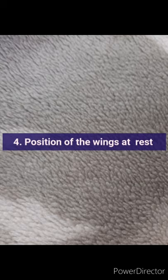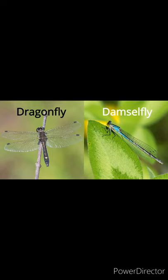Our last point is the position of the wing at rest. In this image both dragonfly and damselfly are shown side by side at rest in their habitat. When not in flight, a dragonfly's wings stick straight out perpendicular to its body, like aeroplane wings. When a damselfly is at rest, its wings fold back in line with its body, giving it a more cylindrical appearance.